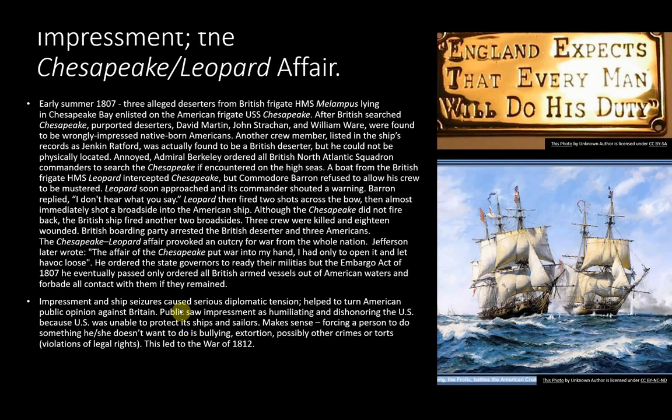The Chesapeake-Leopard affair provoked an outcry for war from the whole nation. Jefferson later wrote, 'The affair of the Chesapeake put the war into my hand. I had only to open it and let havoc loose.' He ordered state governors to ready their militias, but the Embargo Act of 1807 that he eventually passed only ordered all British armed vessels out of American waters and forbade all contact with them if they remained.